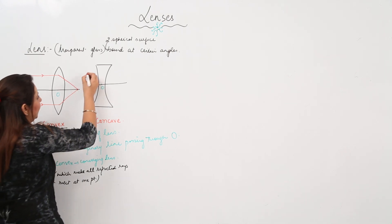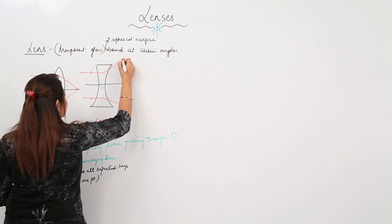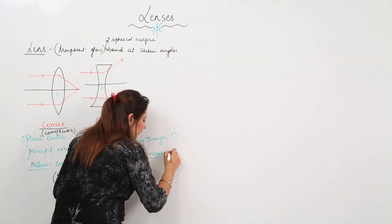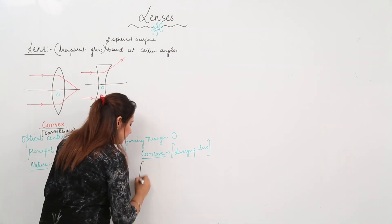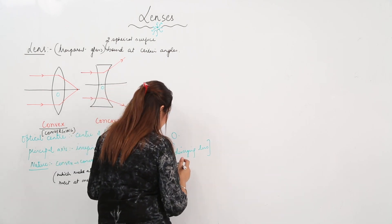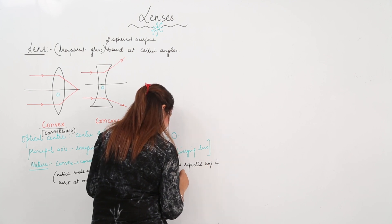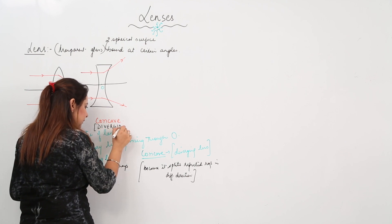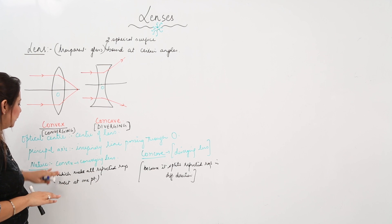For the concave lens, the rays that fall on it after passing through split in different directions. So the nature of the concave lens is that it is a diverging lens, because it splits or diverges the refracted rays in different directions. So the concave lens is a diverging lens.